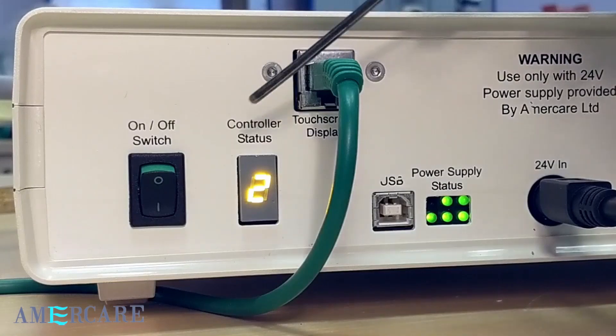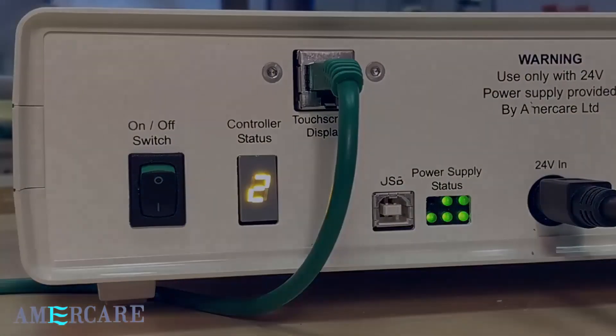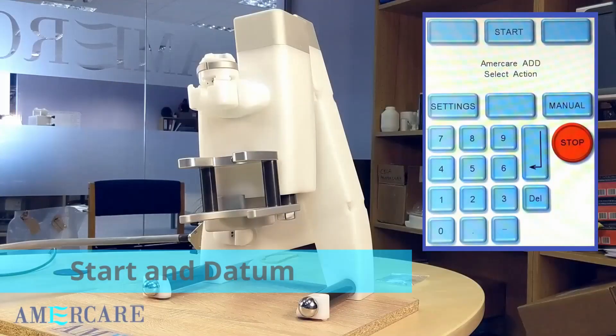The controller status will display the number 2. We can now press start on the touch screen display and the machine will datum each of its axis in turn.